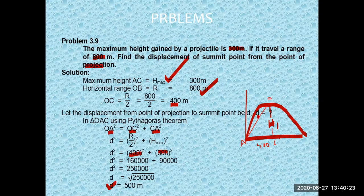We take 400 meters because at the maximum height, the horizontal distance is half the range — half of 800 is 400. After putting in the values of 300 and 400, we calculate the displacement from the point of projection to the summit point. This concludes today's topic.